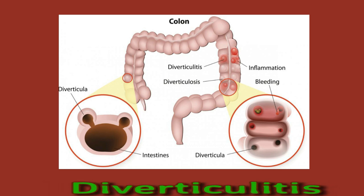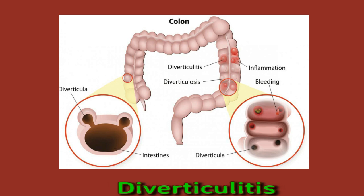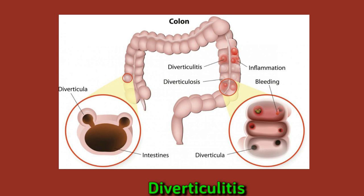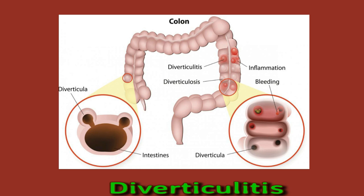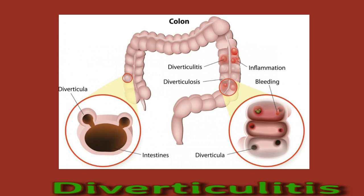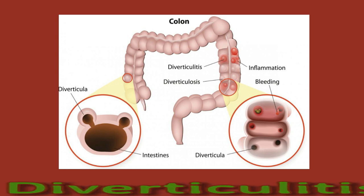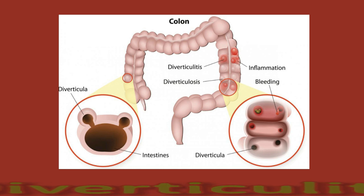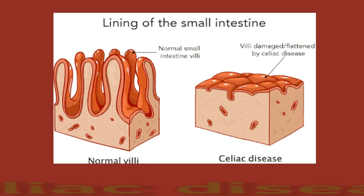Often a person might use the term stomach pain interchangeably with abdominal pain, but pain in the abdomen can come from other organs besides the stomach. Diverticulitis can cause lower left abdominal pain. It occurs when diverticula, which are small pouches in the intestinal wall, become infected and inflamed. The pain may feel sudden and severe, or may start mild and worsen over several days. Other symptoms include constipation or diarrhea, fever and chills, nausea or vomiting, and occasionally blood in stools.